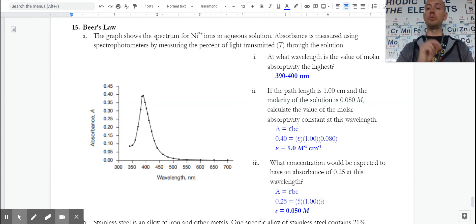If we want to apply this to find out more about how well it's absorbing, we would use the equation here, A equals epsilon BC. The measured value for absorbance is about 0.4. Our path length or the size of our cuvette is one centimeter. The molarity is 0.08, and we can solve for our molar absorptivity constant.